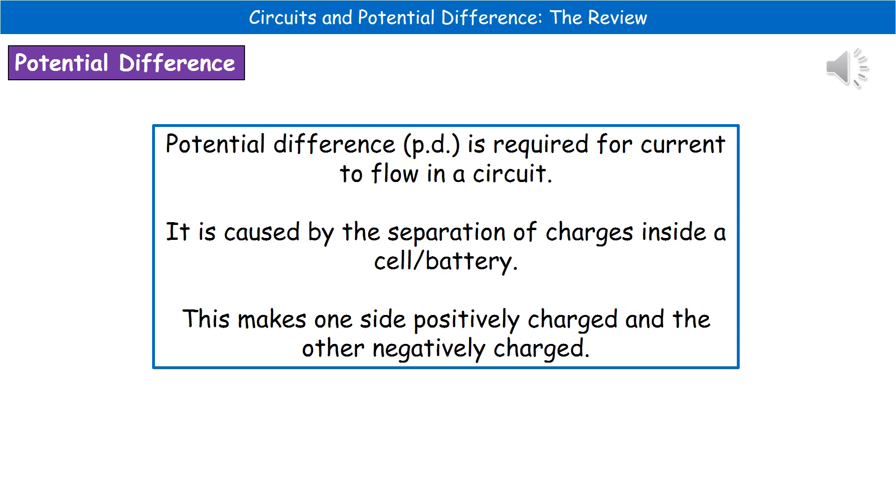In order to actually make a current flow in a circuit, we've actually got to have a potential difference. What causes the potential difference is the separation of charges within that particular cell or battery. And what we find is that when you look at any battery, it's not about the size of the battery that gives us different potential differences. It's about how it's been constructed.